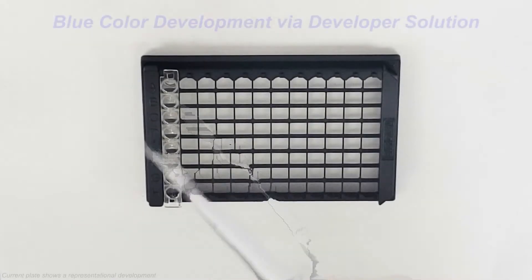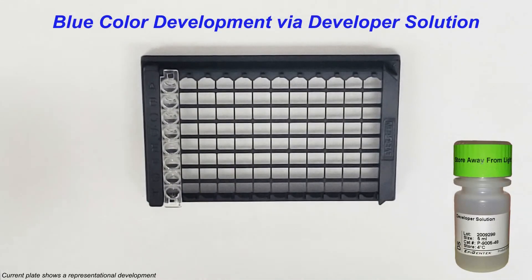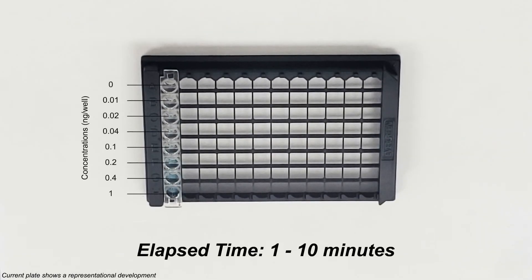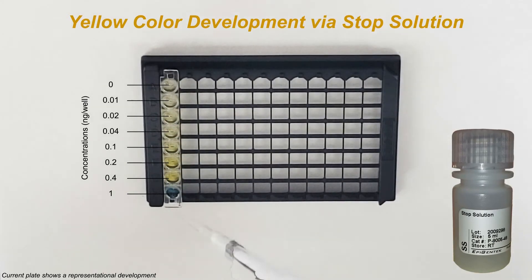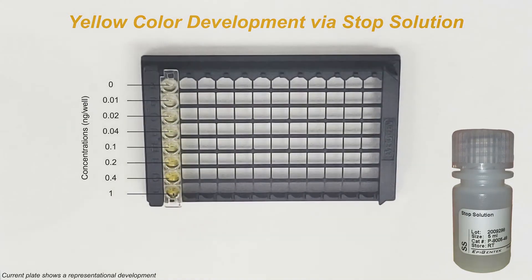Add developer solution to each well. Incubate the plate at room temperature for one to ten minutes away from light, monitoring carefully as development can occur rapidly. When the color turns medium blue for the positive control standards, stop the reaction by adding stop solution to each well and the color will change from blue to yellow.